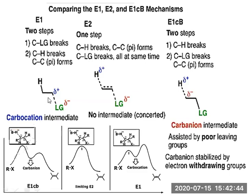In E1cB, the opposite occurs: hydrogen departs first to give a carbanion, and then the leaving group leaves. In E2 elimination, the leaving group and hydrogen must be anti to each other, and it is a concerted mechanism — the C–H bond and the C–leaving group bond on the beta and alpha carbons, respectively, are broken simultaneously, and a new pi bond between the alpha and beta carbons is formed in the same step.